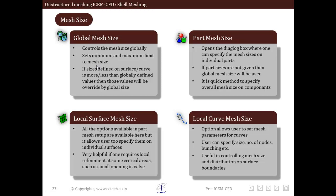It may happen that the local mesh size defined at surface, part, or curve level may exceed the maximum limit or fall below the minimum limit of the global mesh size. In that case, the global mesh size will be used and the local sizes will be discarded. The part level mesh size opens a dialog box where one can specify the mesh size on individual parts. If part mesh sizes are not given, then the global mesh sizes will be used. It is a quick method to specify overall mesh size on each component.